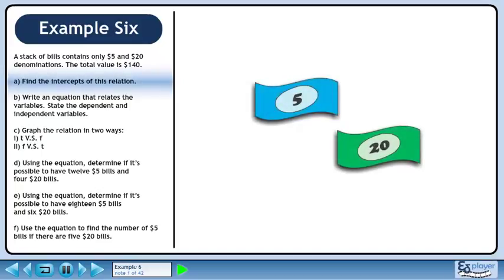A stack of bills contains only $5 and $20 denominations. The total value is $140.